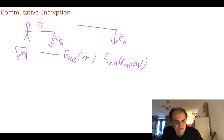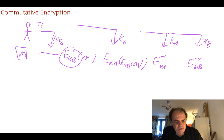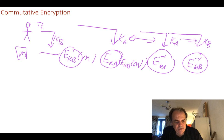With AES we apply Alice's key inverse (decryption) and then Bob's key inverse — we must reverse the order we applied them. So we encrypt with Bob's key, then Alice's key, then decrypt with Alice's key, then Bob's key. We can't swap these two keys around. With commutative encryption, we can apply the keys in any order.